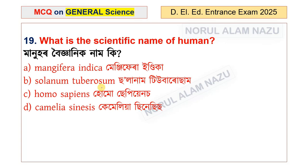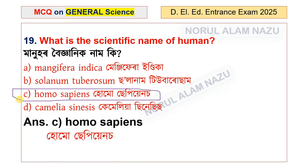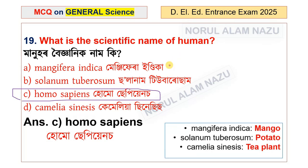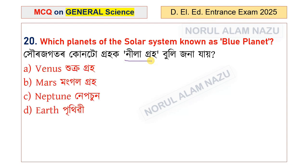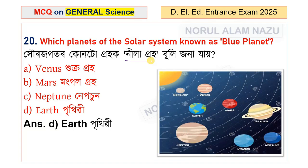What is the scientific name of humans? The options are Mangifera indica, Solanum tuberosum, Homo sapiens, and Camellia sinensis. The answer is option C: Homo sapiens. Mangifera indica is the scientific name of mango, Solanum tuberosum is potato, and Camellia sinensis is tea. Question 20: Which planet of the solar system is known as the blue planet? The answer is Earth.